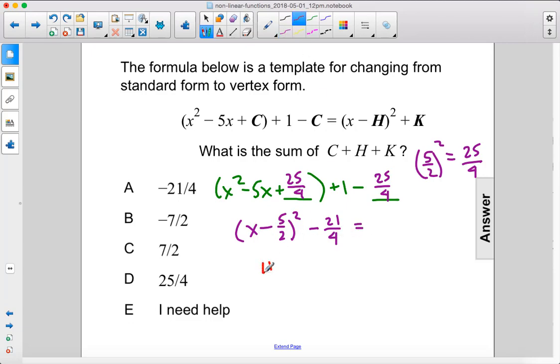That makes our h equal to 5 halves. That makes our k equal to negative 21 over 4, and that makes our c constant 25 over 4.